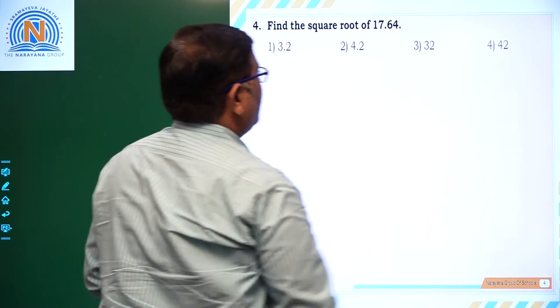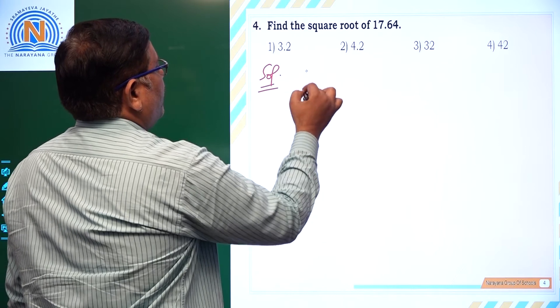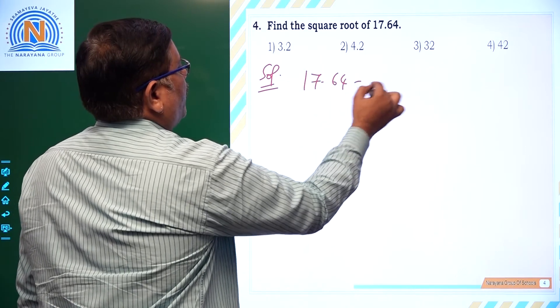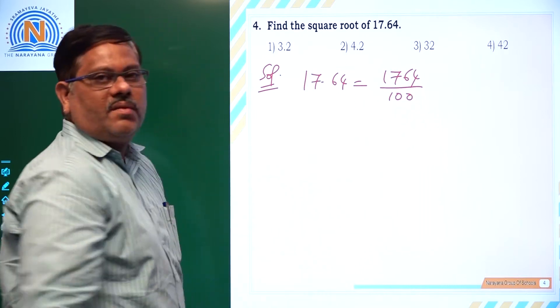Let us see the last question of this assignment. Find the square root of 17.64. 17.64, how can you write? You can write it as 1764 by 100.